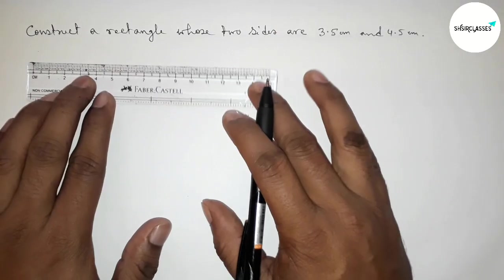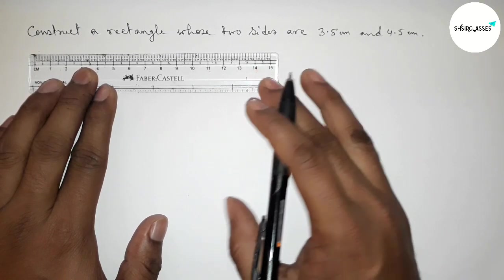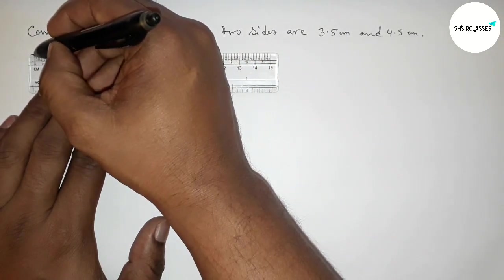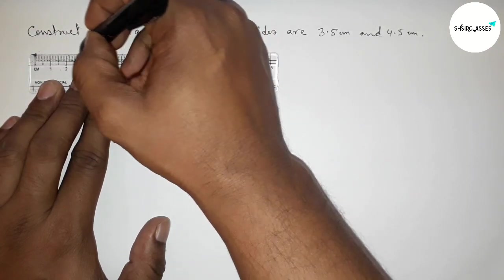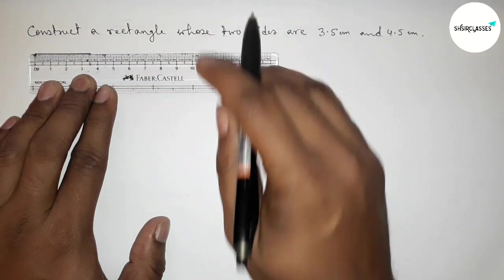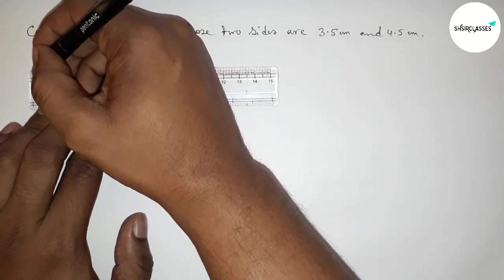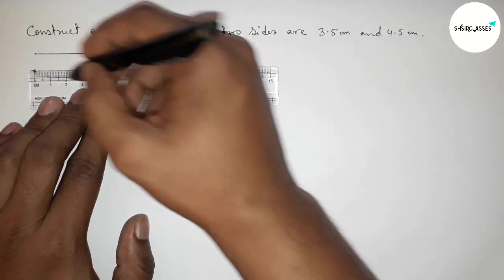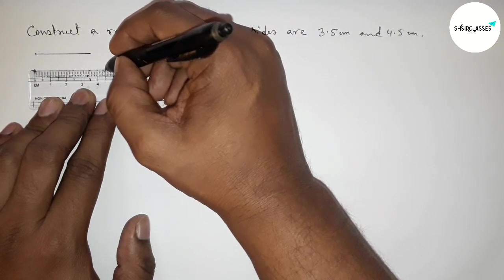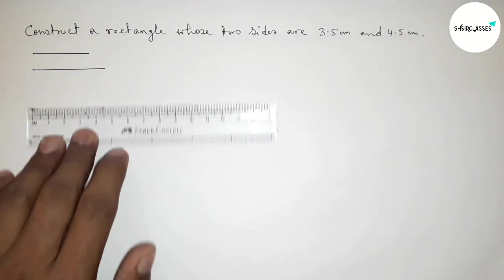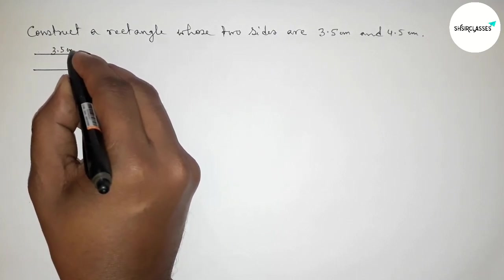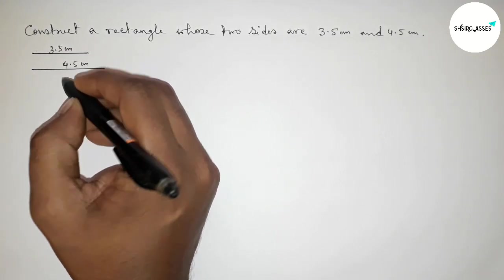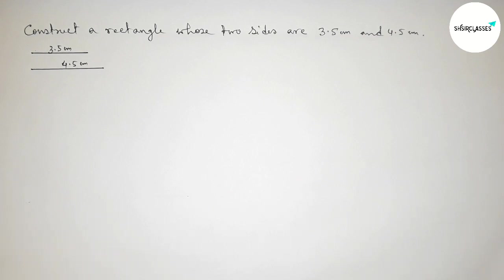First, drawing the two given sides for reference. Drawing 3.5 centimeters — this is the 3.5 centimeter line segment. Then drawing 4.5 centimeters: 0, 1, 2, 3, 4 — this is the 4.5 centimeter line segment. So this one is 3.5 centimeters and this one is 4.5 centimeters.